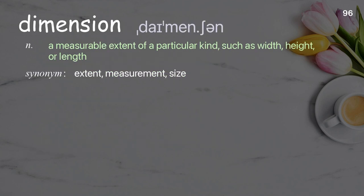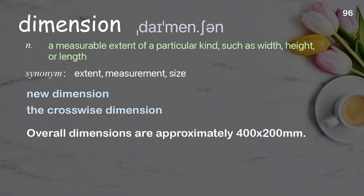Dimension: A measurable extent of a particular kind, such as width, height, or length. Examples: New dimension. The crosswise dimension. Overall dimensions are approximately 400 by 200 millimeters.